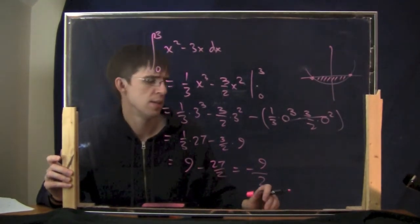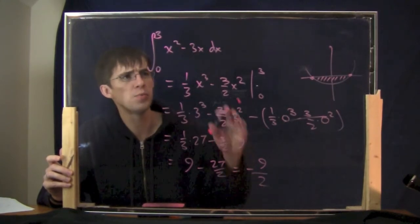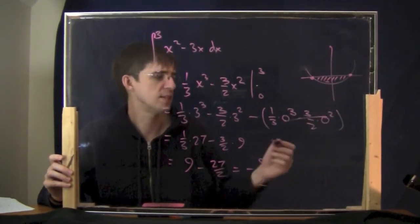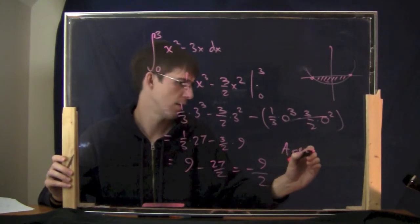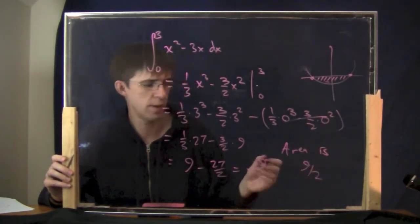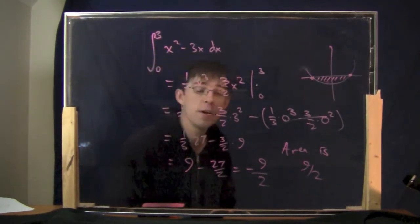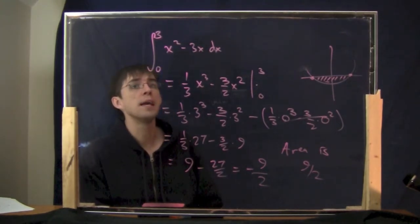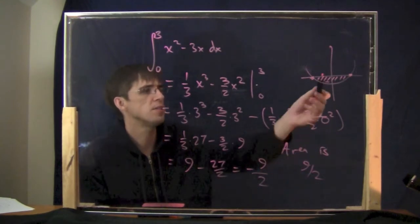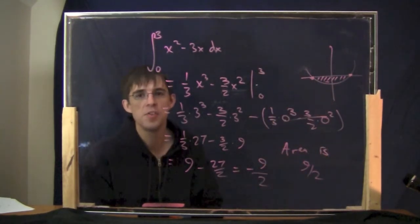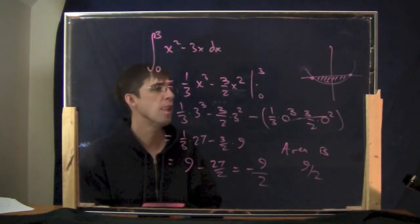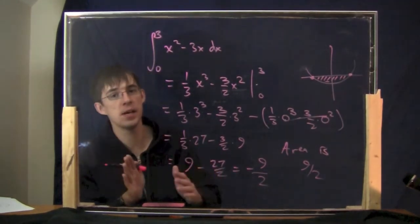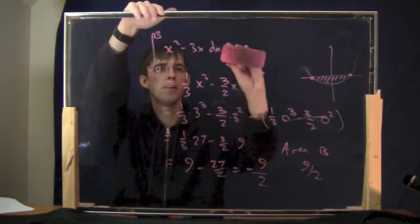You shouldn't be shocked that we got a negative answer — this area is below the x-axis, which I mentioned before is measured as negative. So my final answer, the true area, is 9/2, not negative 9/2. A negative area doesn't make sense. The true area is 9/2.